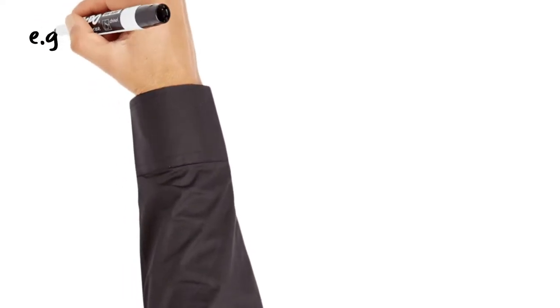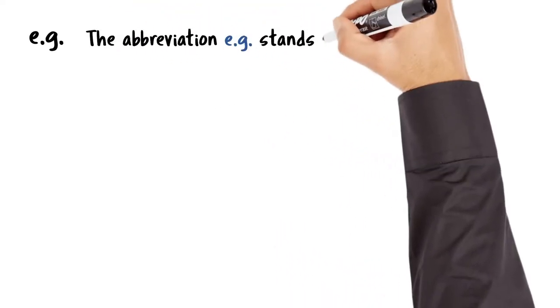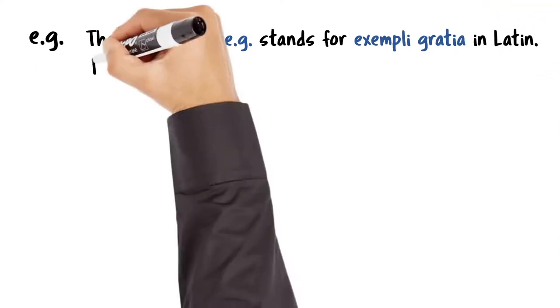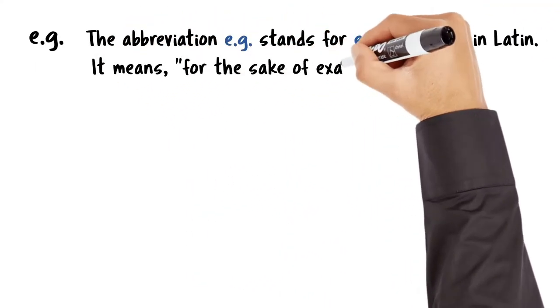The first abbreviation is E-G, with periods after each letter. It stands for exempli gratia in Latin, and it means for the sake of example.